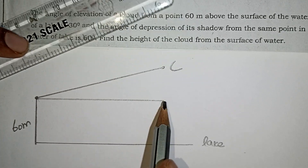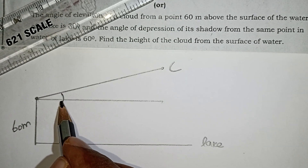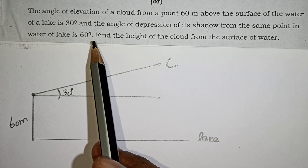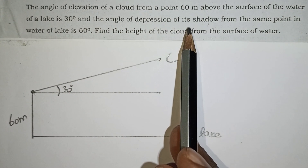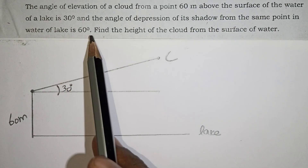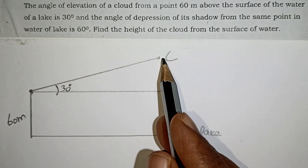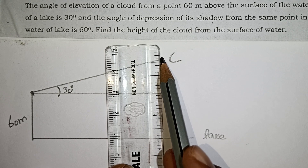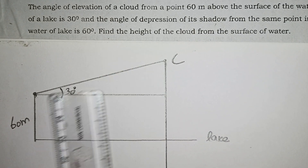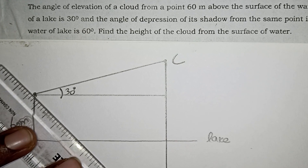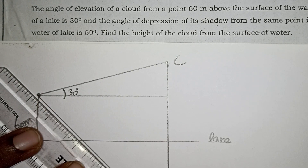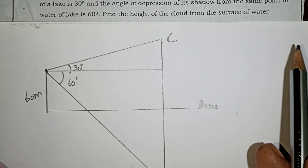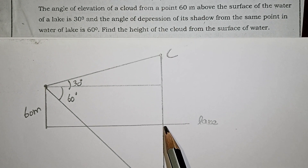The angle of depression of the cloud's shadow from the same point in the water lake is 60 degrees. This is the point of the cloud's reflection in the water, and the angle of depression is 60 degrees. We need to find the height of the cloud from the surface of the water.